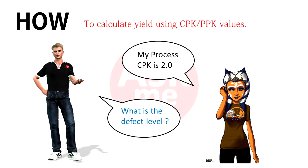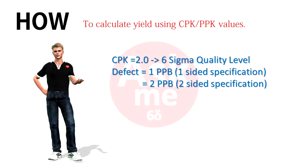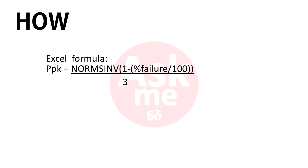But what does this mean? A process with CPK equal to two would mean it has reached six sigma quality. The defect by calculation would be one PPB for a one-sided specification, or two PPB for a two-sided specification. The calculation formula in Excel is as follows.